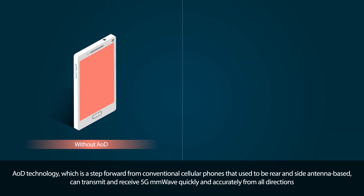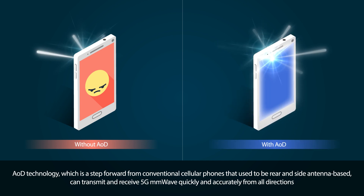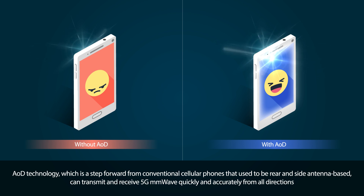AOD technology, which is a step forward from conventional cellular phones that used to be rear and side antenna based, can transmit and receive 5G millimeter wave quickly and accurately from all directions.